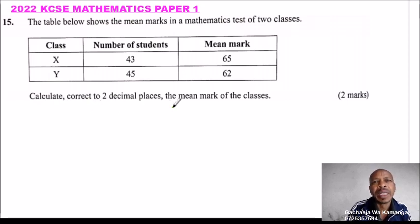Calculate, correct to two decimal places, the mean mark of the classes. So for us to be able to get the mean mark, we need to get, since class X had 43 students and the mean mark was 65, we need to get the total marks that was scored in that class. We do the same for Y, 45 and 62.